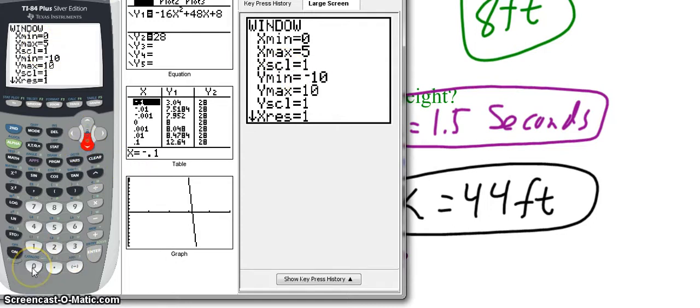y minimum represents height. So again, I don't care about negative heights. So I'm going to change that to 0. y maximum, well, I know the maximum height was 44 feet. So let's set this at 50, just so that we have a little bit of room to see the picture. Now I'm going to hit graph.